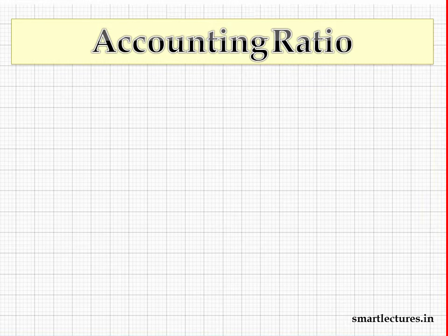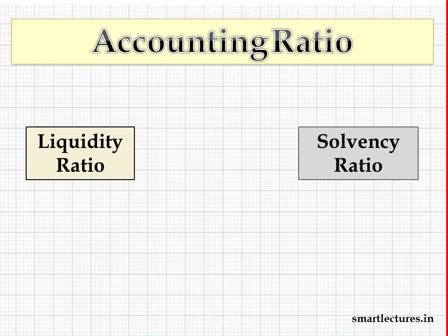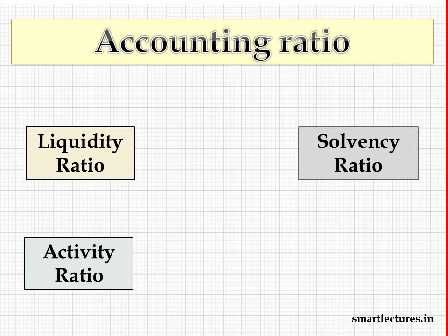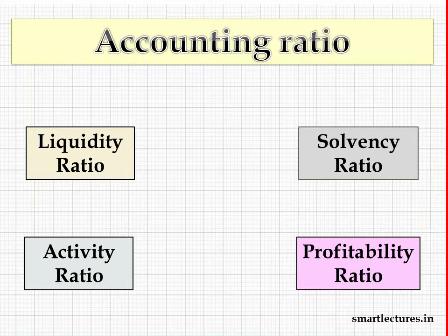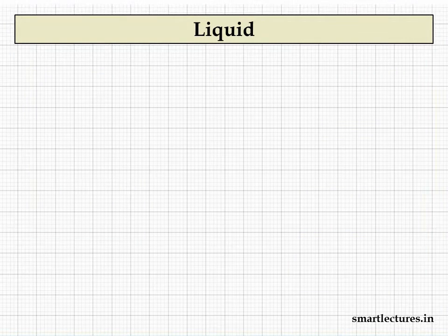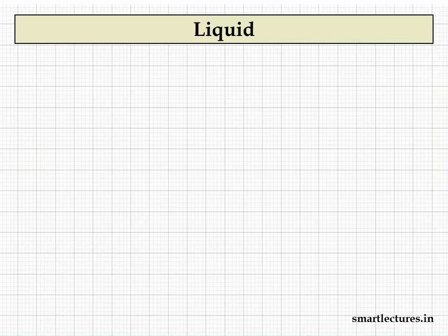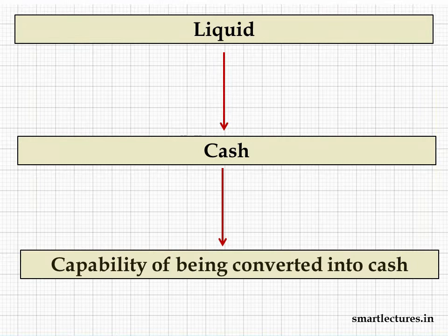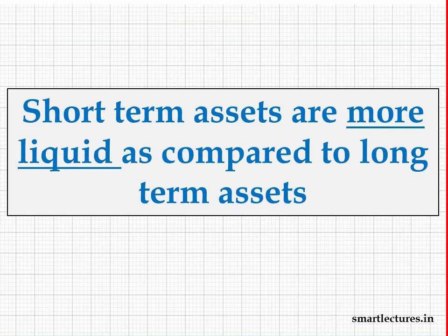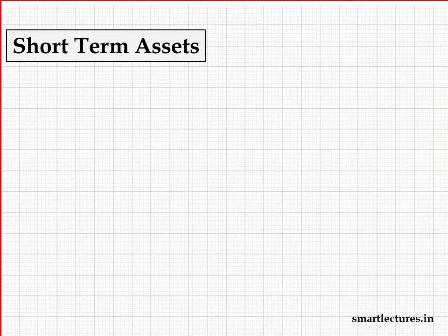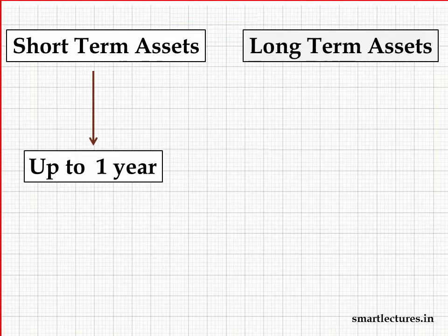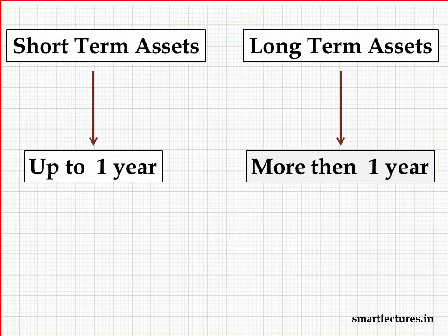All the accounting ratios in your course can be classified into four categories: number one, liquidity ratio; number two, solvency ratio; number three, activity ratios; number four, profitability ratios. First of all, we'll discuss the meaning of 'liquid' in accountancy — it's not the same as in science. In accountancy, liquid means cash or the capability of being converted into cash. Short-term means up to one year; long-term means more than one year.